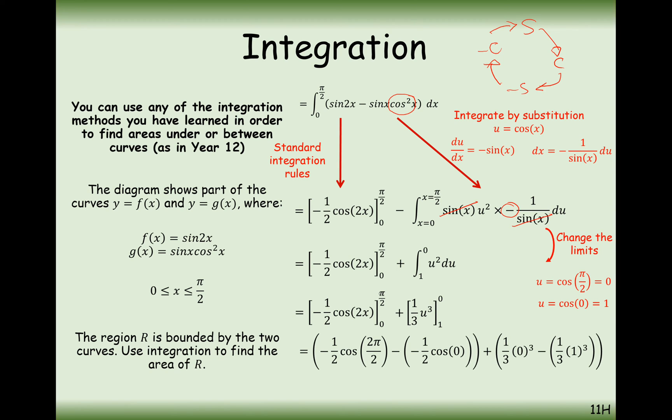So now we're going to substitute in, so pi by 2 gets substituted in, and then we take away 0 being substituted in, and then the last term here we're going to substitute 0 in, and then take away 1 being substituted in. And when we do all of this calculation, we end up with 2 thirds, being the area in between, remember that red curve and the blue curve.